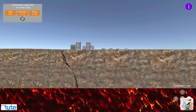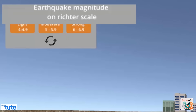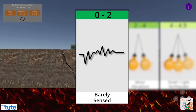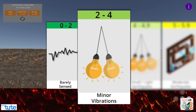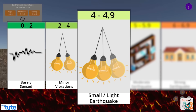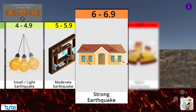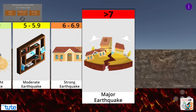On the left-hand side we have a small box that says 'Earthquake Magnitude on Richter Scale' with three buttons. If the intensity is between 0 to 2, it can be barely sensed. When the intensity is more than 2 and less than 4, we can feel minor vibrations. From 4 to 4.9 is considered a light earthquake. From 5 to 5.9 are considered moderate earthquakes. From 6 to 6.9 are strong earthquakes, and anything above 7 is considered a major earthquake which can destroy cities and continents.